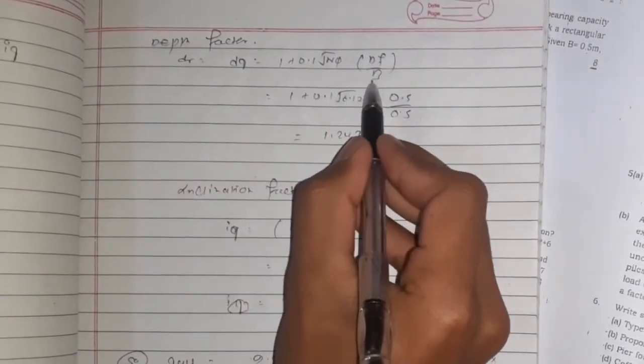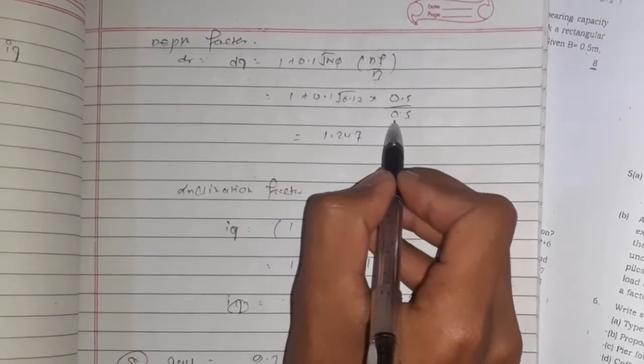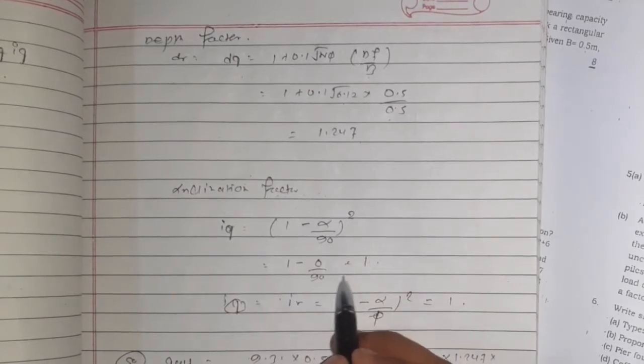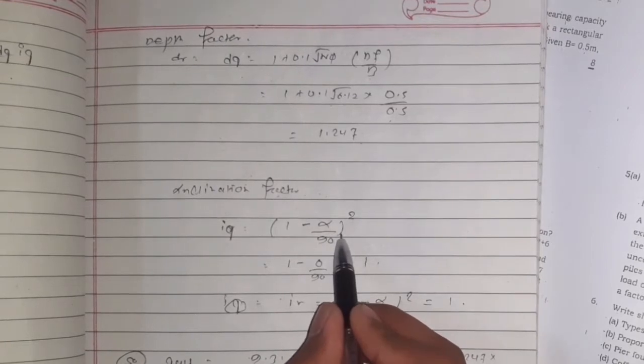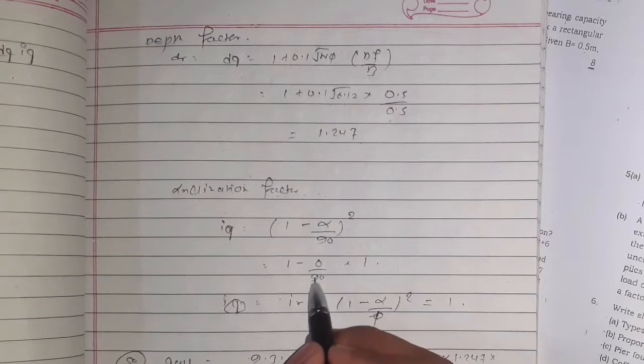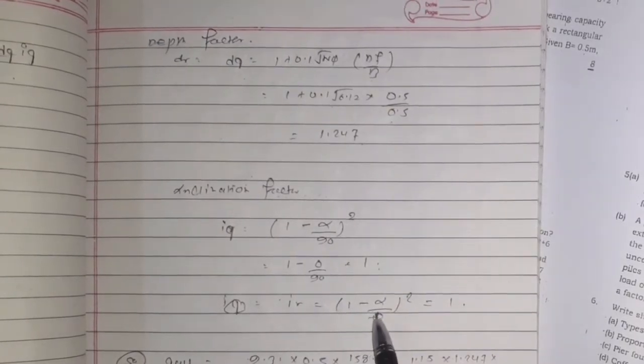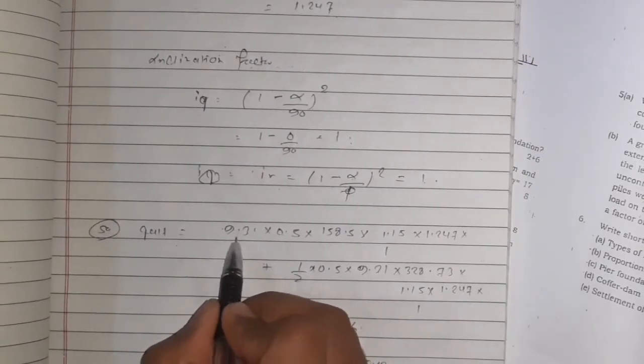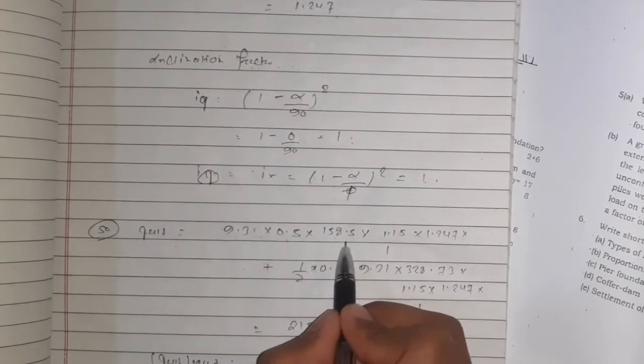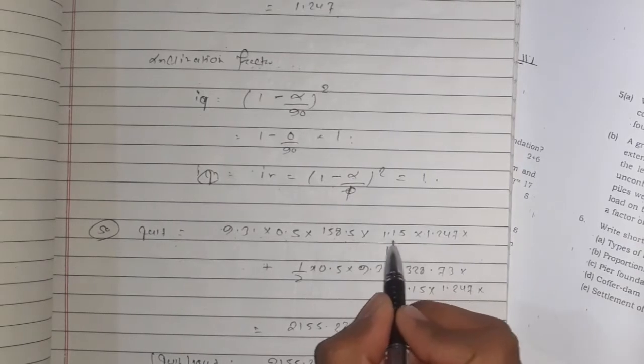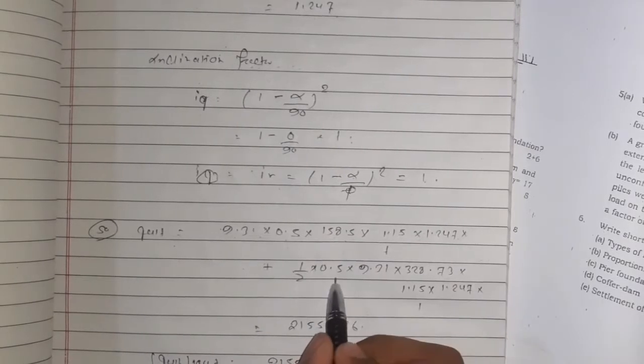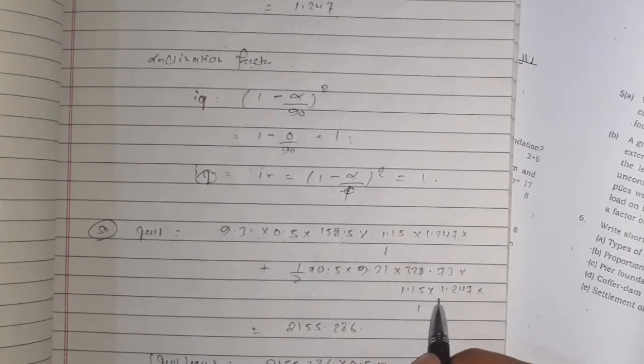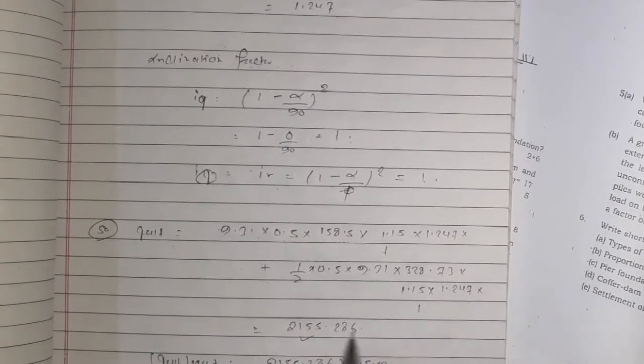dq = 1 + 0.1·√Nφ·df/B = 1 + 0.1·√6.12·0.5/0.5 = 1.247. Inclination factor: iq = (1 - α/90)². α = 0 since the load is vertical, so iq = 1. q ultimate = 9.31·0.5·158.5·1.15·1·1.247·1 + 1/2·0.5·9.31·228.73·1.15·1.247·1 = 155.286 kN/m².